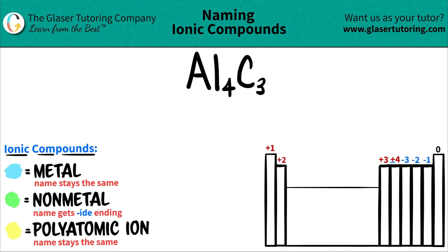Today we're going to be naming the ionic compound Al4C3. We have two elements here: aluminum, which is Al, and carbon, which is C.